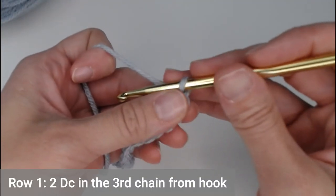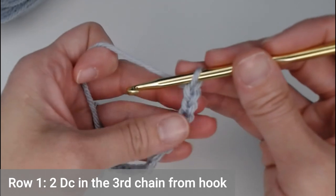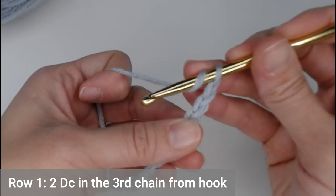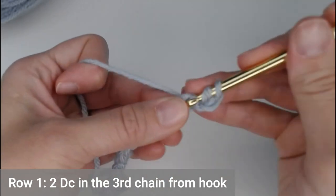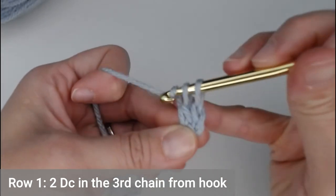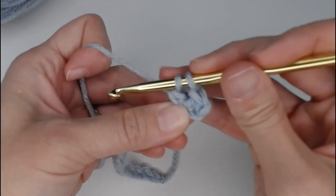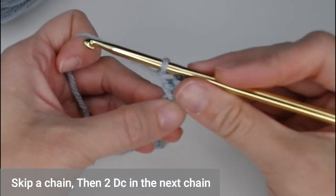You're going to double crochet in the third chain from your hook. So, 1, 2, 3. We're going to actually put 2 double crochets into that same chain.